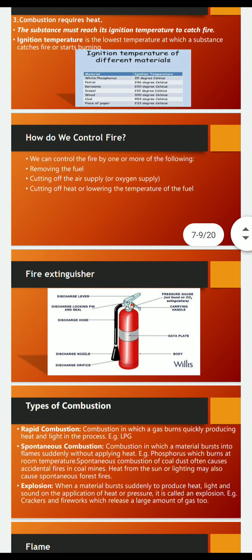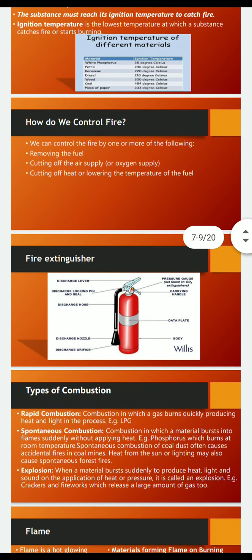There are different types of combustion: slow combustion, rapid combustion, spontaneous combustion, and explosion. In slow combustion, the process is very slow — for example, rusting and digestion of food are examples of slow combustion.